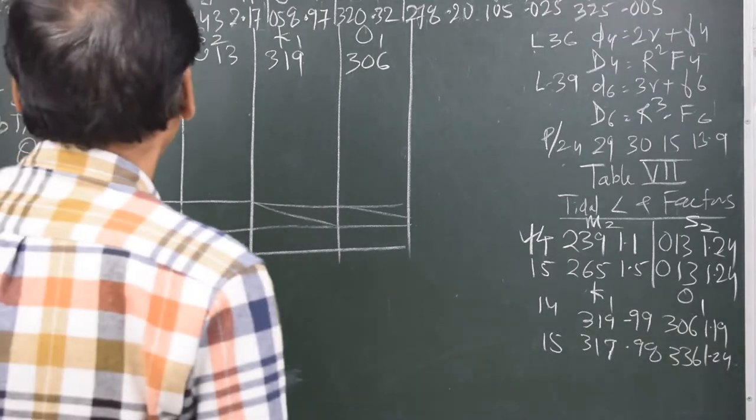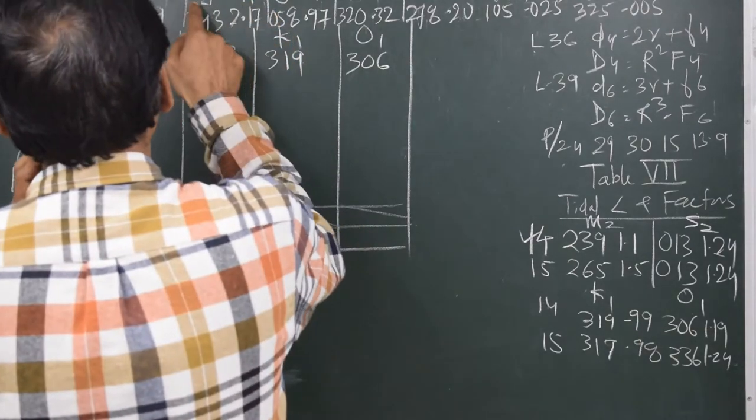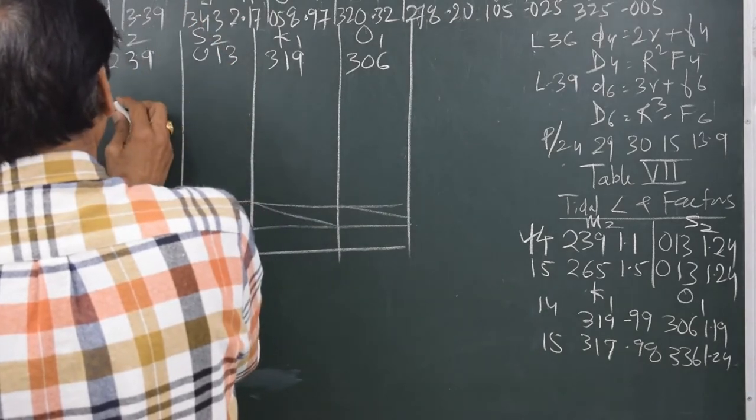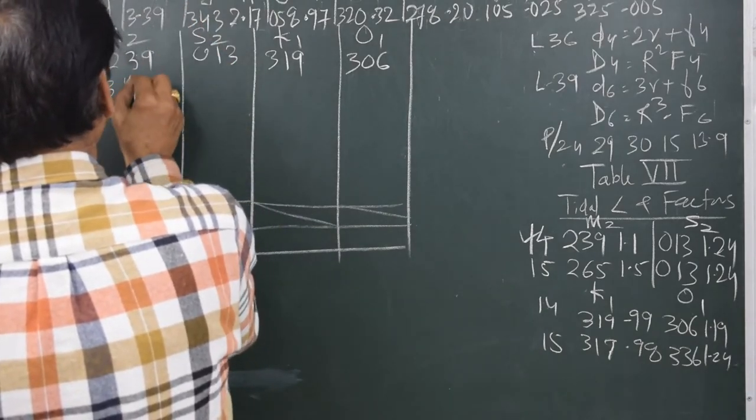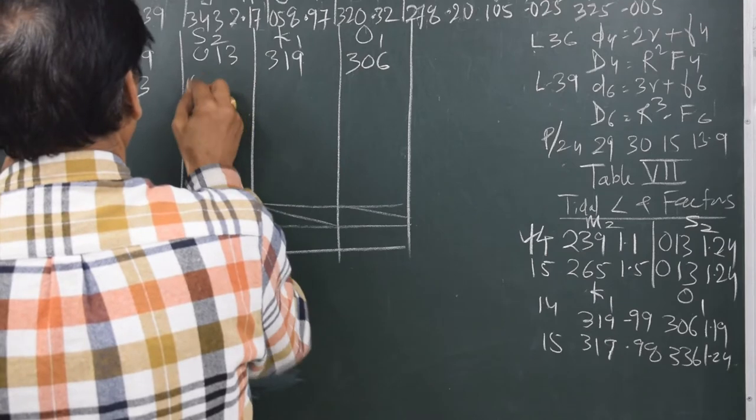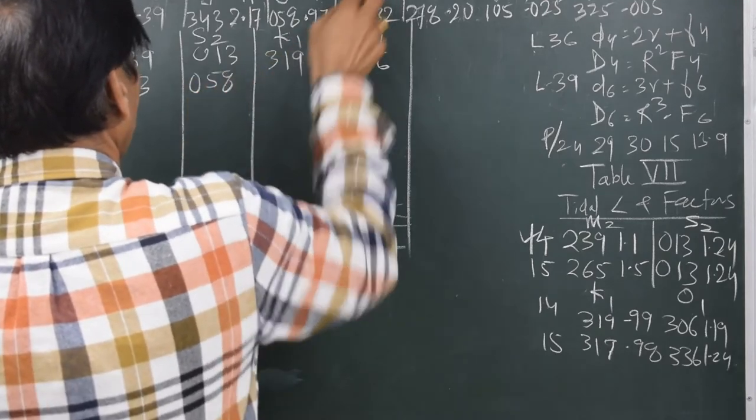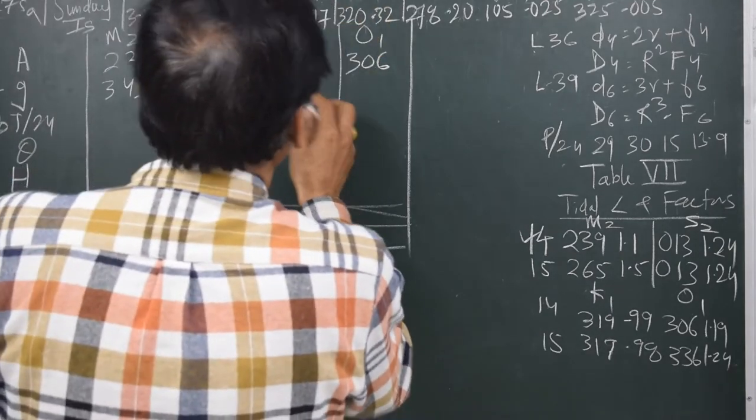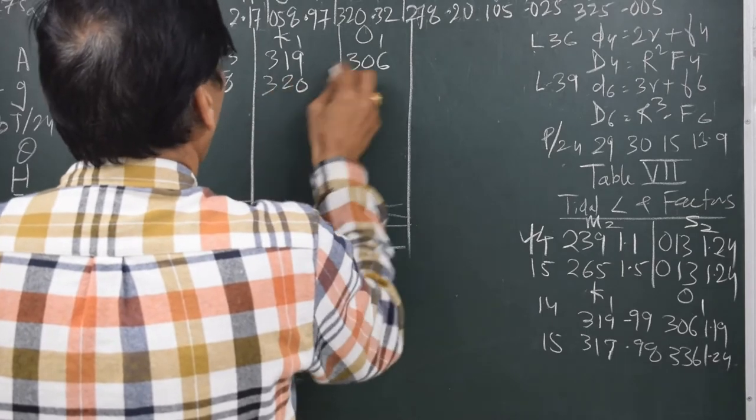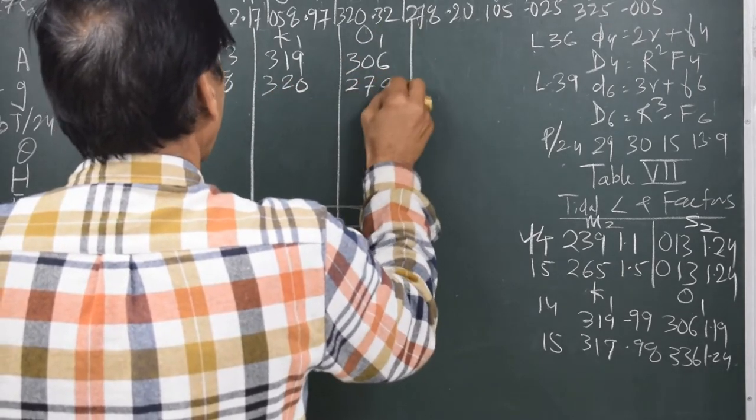Now G I pick up from part 3. So for M2 it is 343. For S2 it is 058. For K1 it is 320 and for O1 it is 278.